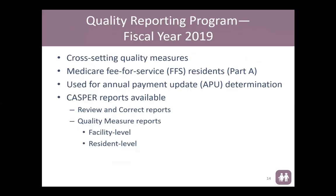In quality reporting fiscal year 2019, they will continue with their cross-setting quality measures using Section GG data provided through CMS. This looks specifically at Medicare fee-for-service residents using Part A and is used for your annual payment update determination. You have CASPER reports available to look at and evaluate your performance in the quality reporting program, including review and correct reports as well as quality measure reports for facility and resident level specific to the quality reporting program.